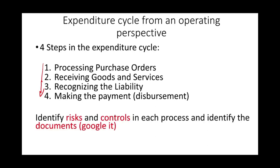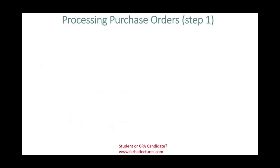In this session, I'm going to identify the risks and controls in each process and identify the documents. When I mention a document, if you're not familiar with it I will explain it — I'd suggest you Google it just to take a look. I'll go through each step separately, identifying the risks, controls, and documents involved. Starting with the process: purchase order, which is step one.